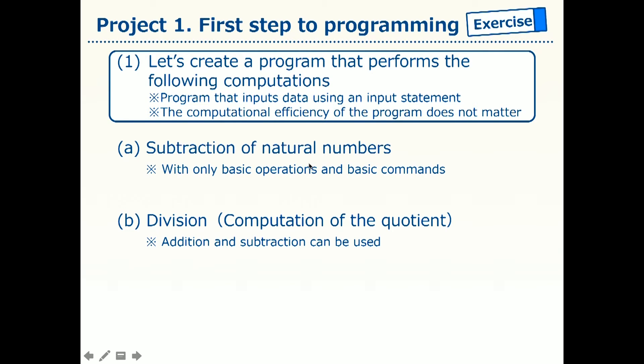The second one is division. We need to consider only natural numbers. So what we need to compute is the quotient, that is the result of the division rounded down to the natural number.